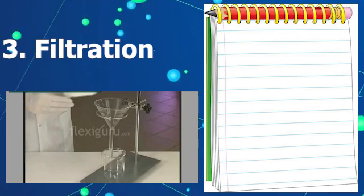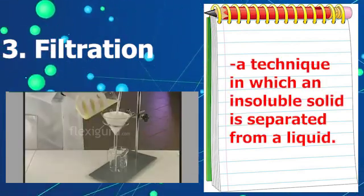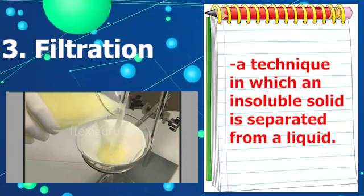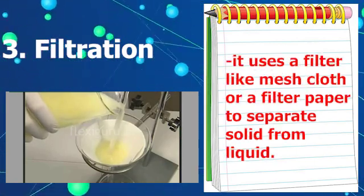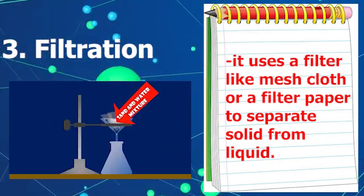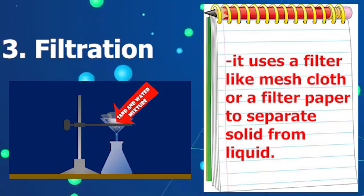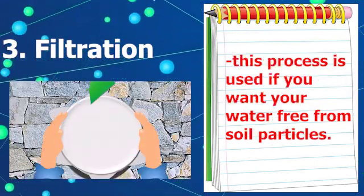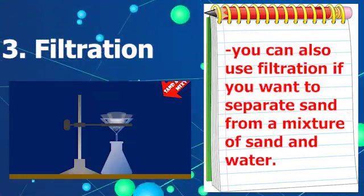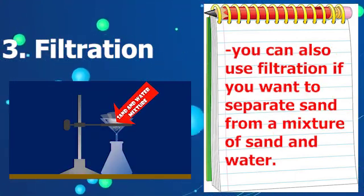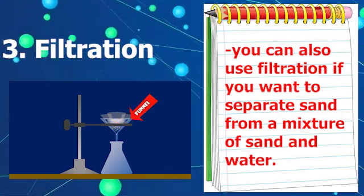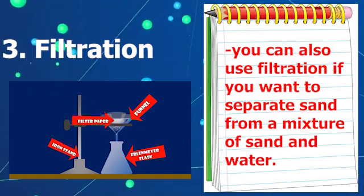Number three: filtration. This is a technique in which an insoluble solid is separated from a liquid. It uses a filter like mesh cloth or filter paper to separate solid components from a liquid. This process is used if you want your water free from soil particles. You can also use filtration to separate sand from a mixture of sand and water, because sand does not dissolve in water.